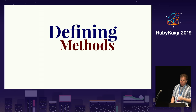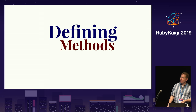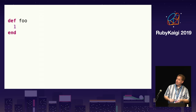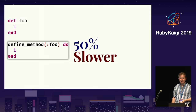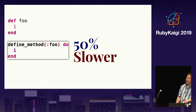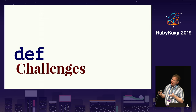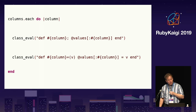Calling a method defined with def is faster than calling a lambda. Similarly, how you define a method in Ruby can affect its performance. If you define a method using define_method passing a block, calling that method is about 50% slower than calling a method defined with def. So in general, you want to prefer defining methods with def. However, when defining methods at runtime, it can be challenging to use def — in order to use def at runtime, you also need to use eval, which can have security implications.